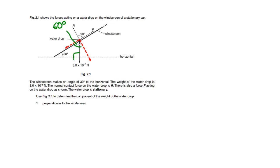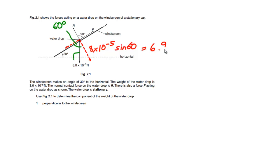If you need a reminder of how to calculate the horizontal and vertical components, please refer to my video on this topic. To calculate the component acting perpendicular to the windscreen — that is the component that is not touching this angle — we need to multiply the weight by the sine of this angle. So in this case it will be 8 times 10 to the minus 5 multiplied by sine of 60 degrees, which is equal to 6.95 times 10 to the power of minus 5 newtons.